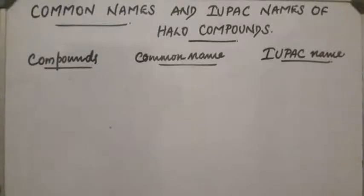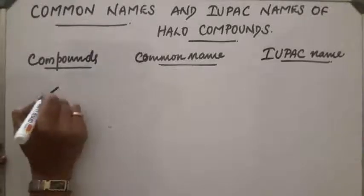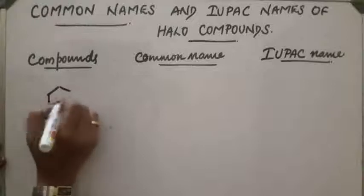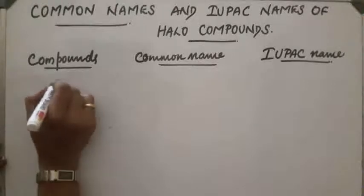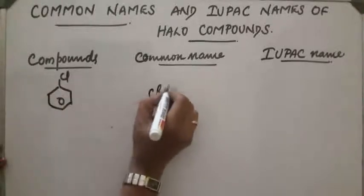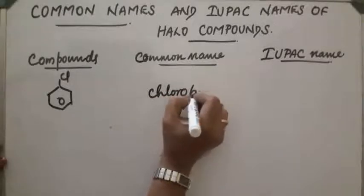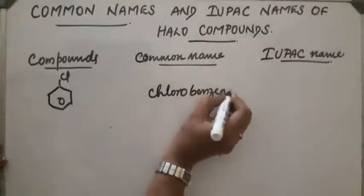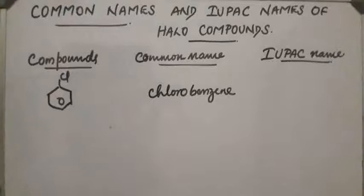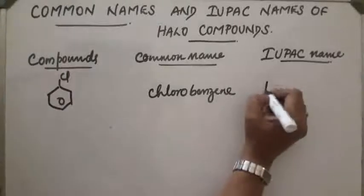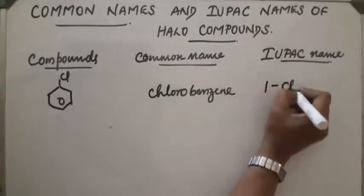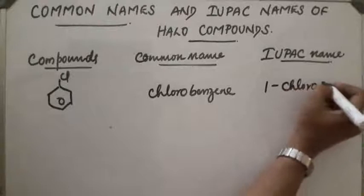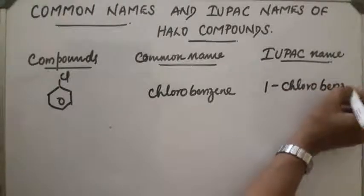Now we move to common names and IUPAC names of aryl halides. The first compound is chlorobenzene, also written as 1-chlorobenzene.